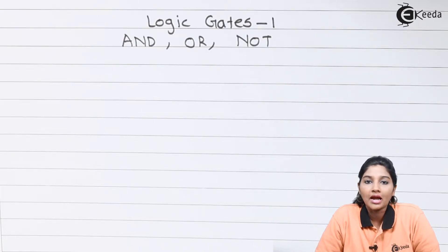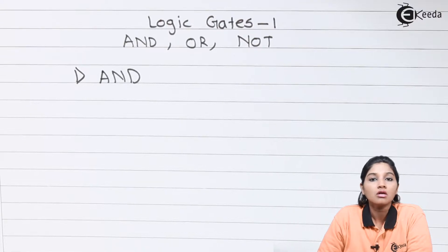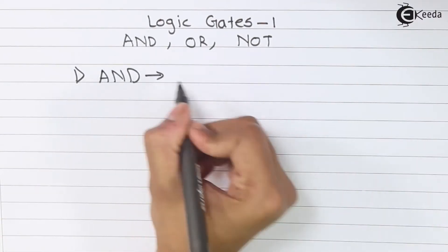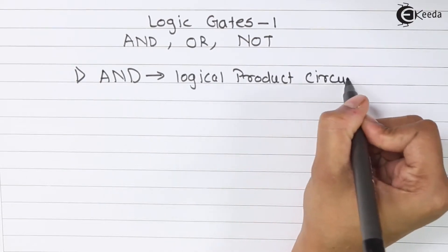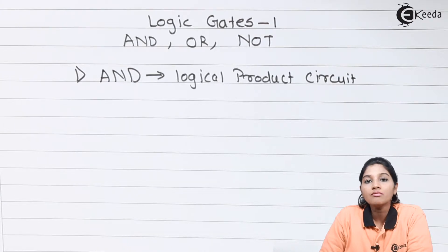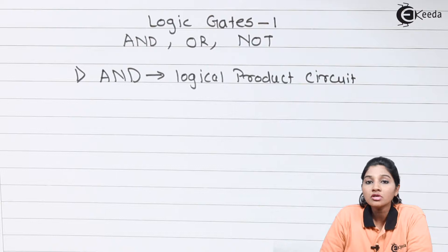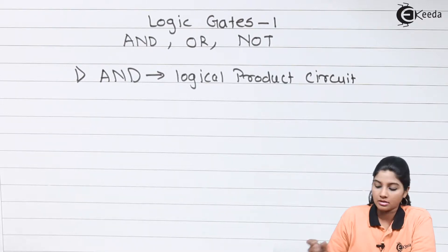The first gate is the AND gate. AND is nothing but a logical product circuit. In AND gate, if any one of the inputs is low, the output goes low. If both the inputs are high, then only the output goes high. Now let's first see the symbol and logical expression for AND gate.